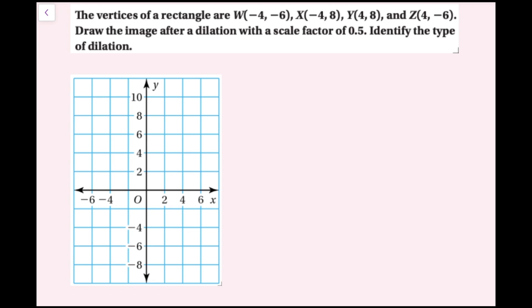For example three, the vertices of a rectangle are w(-4, -6), x(-4, 8), y(4, 8), and z(4, -6). Draw the image after a dilation with a scale factor of 0.5 and identify the type of dilation. First I'll plot my original figure in blue: w is (-4, -6), x is (-4, 8), y is (4, 8), and z is (4, -6). I'm going to draw my rectangle.